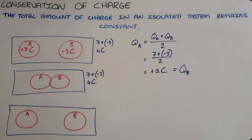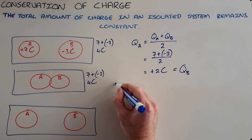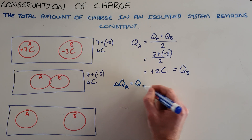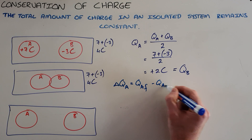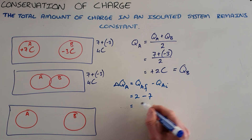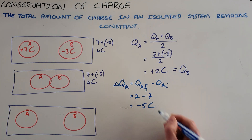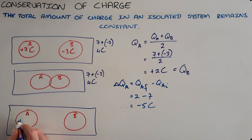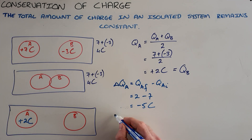An extension of this question would be to calculate the change in charge for any one of these objects. The change in charge on object A is equal to the final charge of A minus the initial charge of A. The final charge is 2, the initial charge was 7, and the change therefore was negative 5 coulombs. As we can see, A went from having a charge of plus 7 to having a charge of plus 2, which clearly shows that it has lost 5 coulombs of charge.